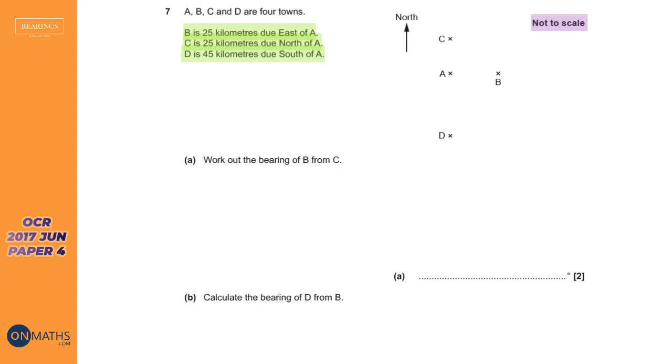So let's use the diagram they've given us and mark on the bits that it says there. It says that B is 25 kilometers due east of A, so this is 25 kilometers. C is 25 kilometers north of A, so we have 25 there. And finally it says D is 45 kilometers south of A. So let's put on my 45 kilometers.